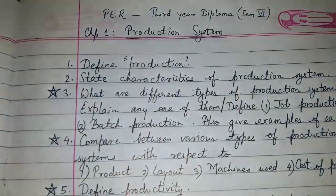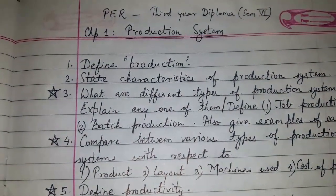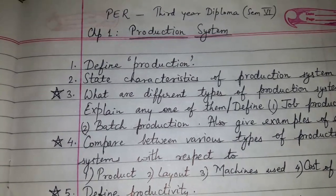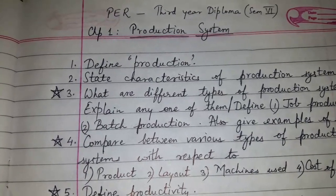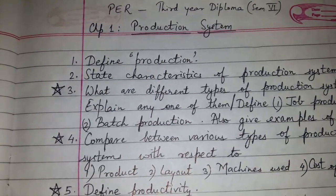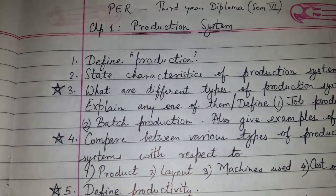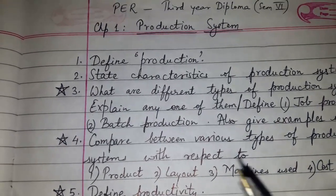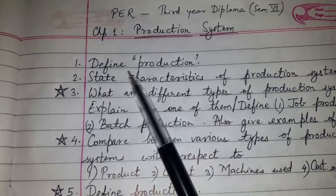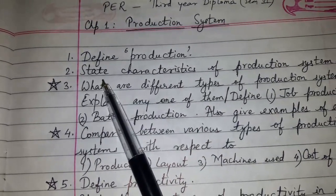Hi friends, today's topic of discussion is Chapter Number One: Production System, for the subject PER — that is Production Engineering and Robotics — for third year diploma, semester six.